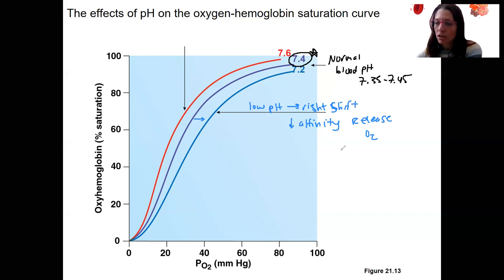This is called the Bohr effect. PCO2, high PCO2 is the same thing. Right shift. And actually those go hand in hand. High PCO2 and low pH. And we'll see that relationship in just a moment here.